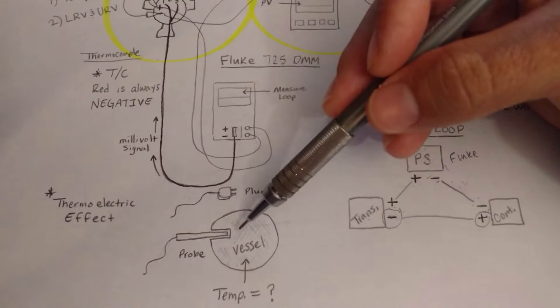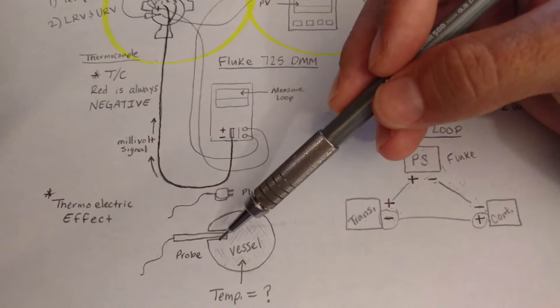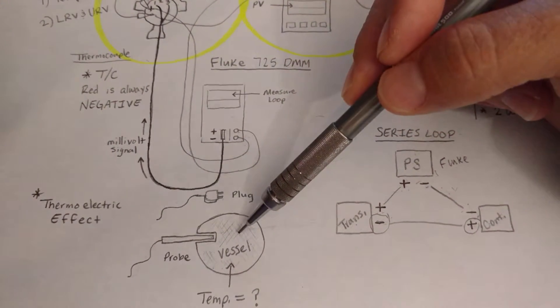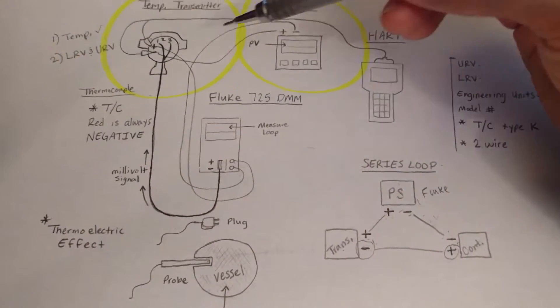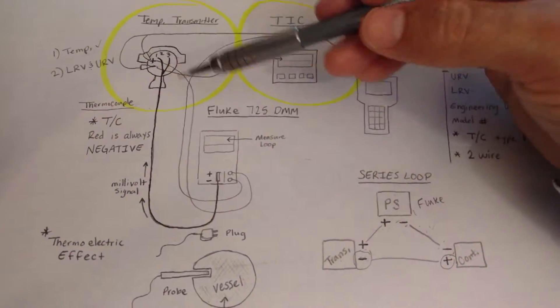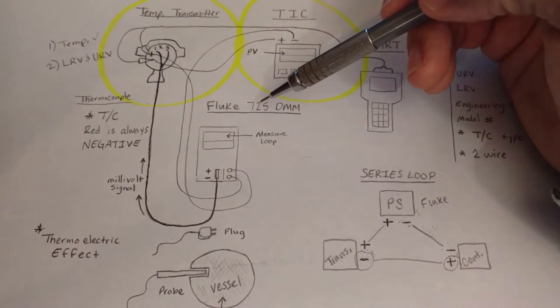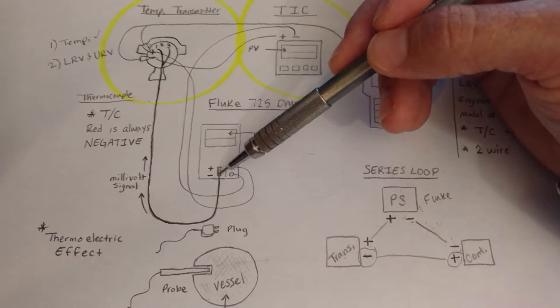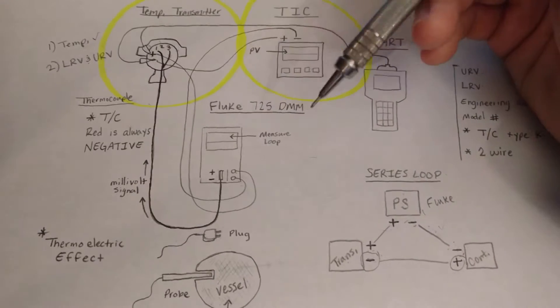So if this was 72 degrees, then this probe would produce a millivolt signal that represented 72 degrees. So in our testing of this transmitter we're using a plug that the Fluke 725 digital multimeter is going to provide a millivolt signal to that plug that it will send to the transmitter.